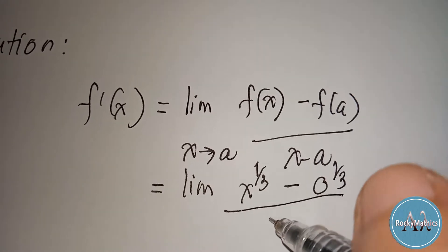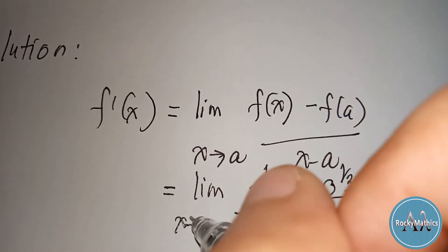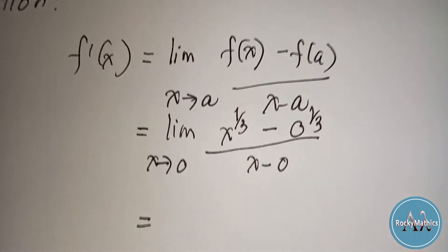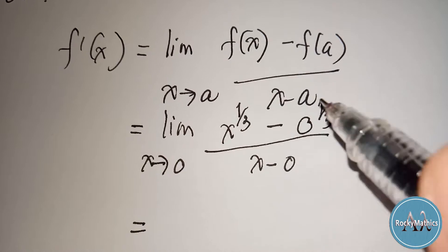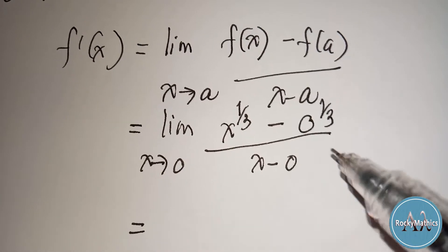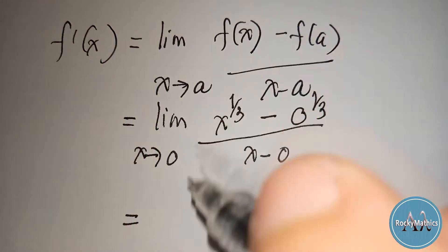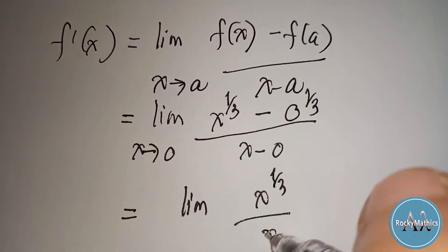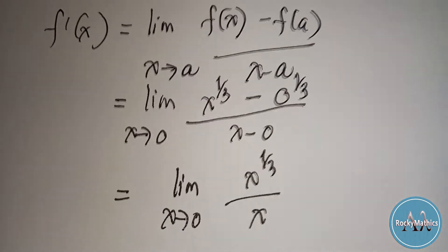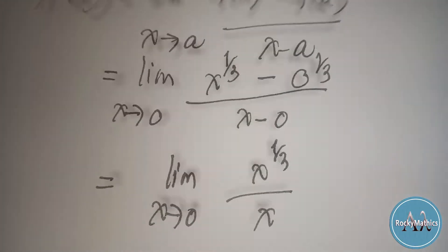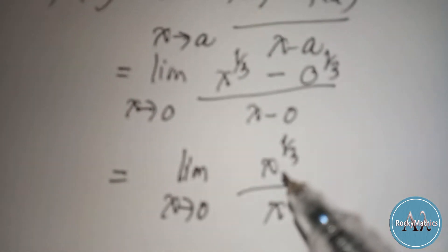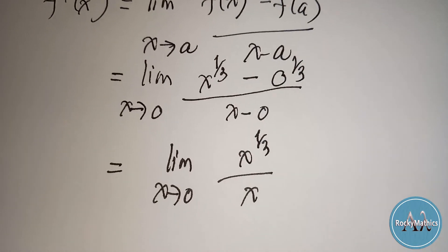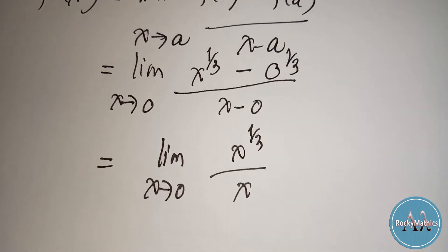Since 0 raised to one-third is just zero, and x minus zero is x, we have the limit of x raised to one-third over x, as x approaches zero. We can simplify this expression since we have the same base x.